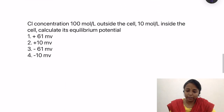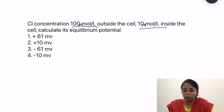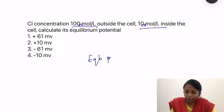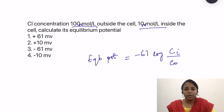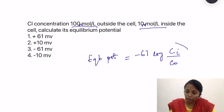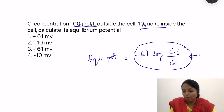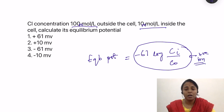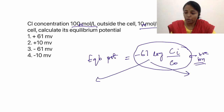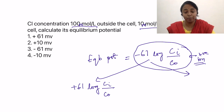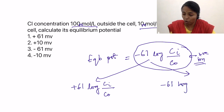Third question: chloride concentration outside is 100 millimoles per liter and inside is 10 millimoles per liter. Calculate its equilibrium potential. You apply the Nernst equation: equilibrium potential equals minus 61 log concentration inside divided by concentration outside. However, you should remember that this equation is simplified for a positive ion. When we consider a negative ion, we have to change the signs — either write plus 61 log (inside/outside), or write minus 61 log (outside/inside).